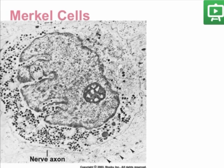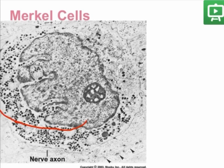Merkel cells are non-dendritic cells. They are often closely opposed to nerve fibers, as seen here, because they act as receptors for sensory function. These cells are often seen deeply invaginated and many small vesicles can be seen close to the nerve fiber.